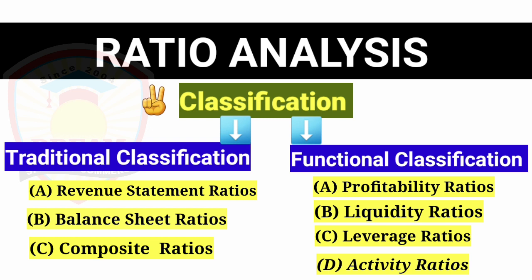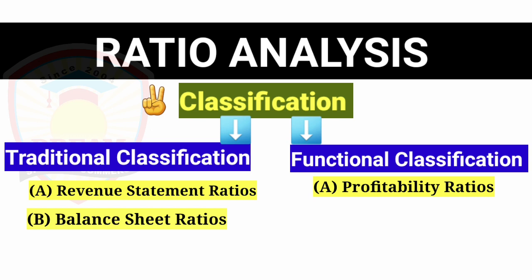In classification there are basically two types. But what is useful is Type 2: functional classification. In functional classification there are four topics: profitability, liquidity, leverage, and activity.